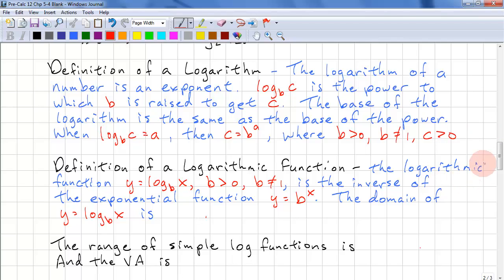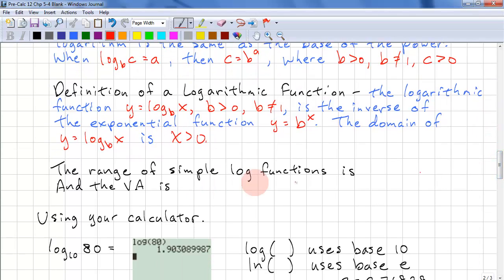The definition of a logarithmic function. We just have a variable. y is equal to log b of x. b must be greater than 0, and b does not equal 1. This is the inverse of the exponential function y is equal to b to the power of x. The domain for y is equal to log b of x is x is greater than or equal to 0. And the range of this simple log function is y is all reals. The vertical asymptote is x equals 0.